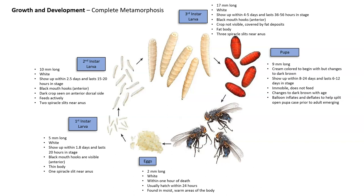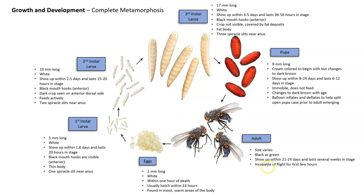As they develop into more adult-sized flies, they continue to get darker. The balloon — which is the cocoon — inflates and deflates cyclically to help split open the pupae case prior to the adult emerging. Adult flies can vary in size, are typically black or green, and show up within 21 to 24 days after death, lasting several weeks in this stage. They are incapable of flight for the first few hours, so it's important to know whether these flies completed metamorphosis on the body or arrived just within the first few hours.